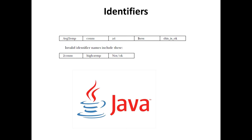The dollar sign character is not intended for general use. Identifiers must not begin with a number, to avoid being confused with a numeric literal. Java is case sensitive, so 'Value' with a capital V is a different identifier than 'value' with a lowercase v. Valid examples include AVG, temp, count, a4, and dollar_test. Invalid identifiers include 2count, hi-temp, and not/ok.